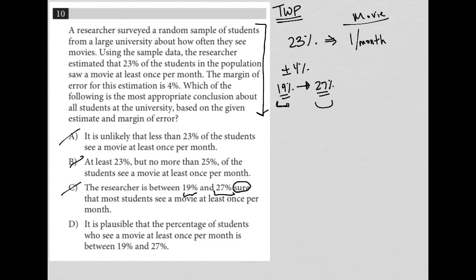So choice D says, it is plausible that the percentage of students who see a movie at least once per month is between 19% and 27%. And that is exactly what we have here, because of that plus or minus 4% error. So D is the best answer to this question.